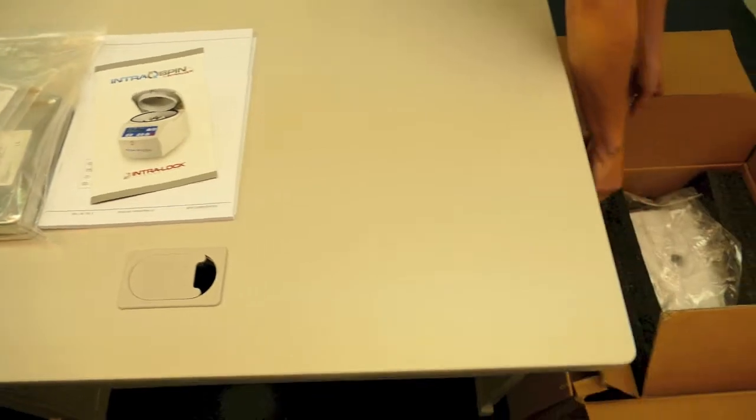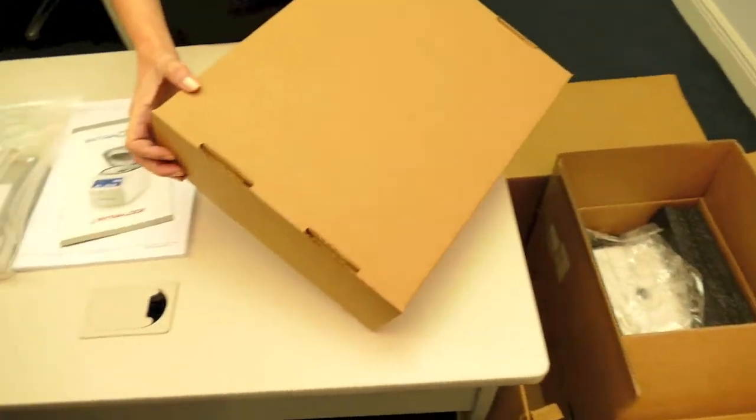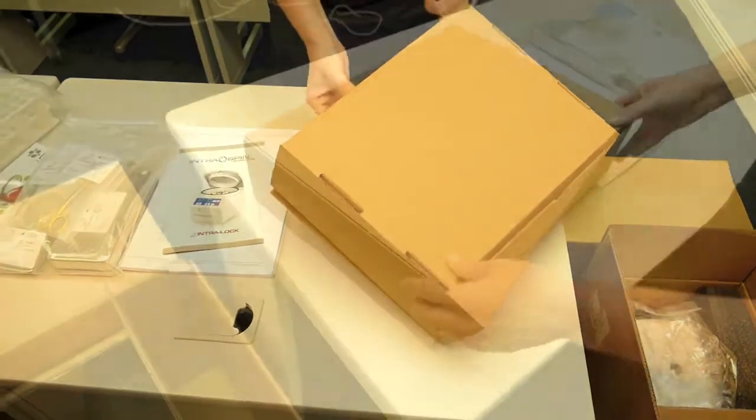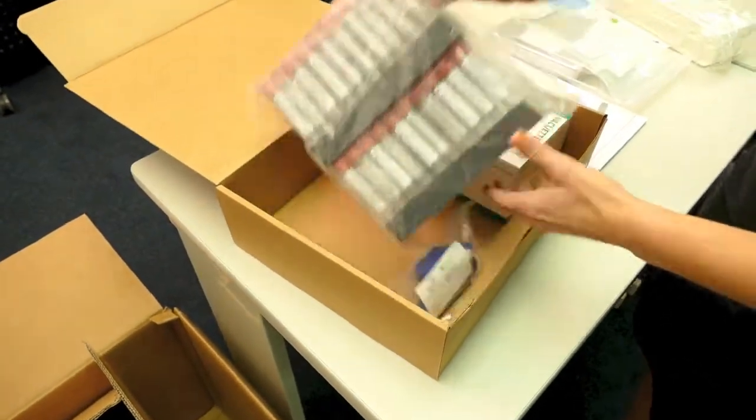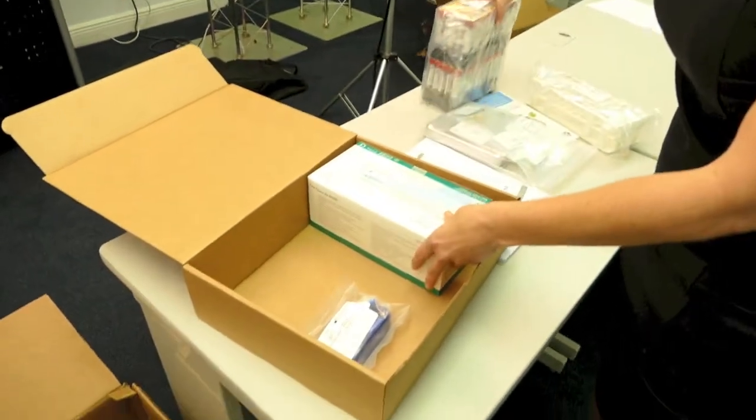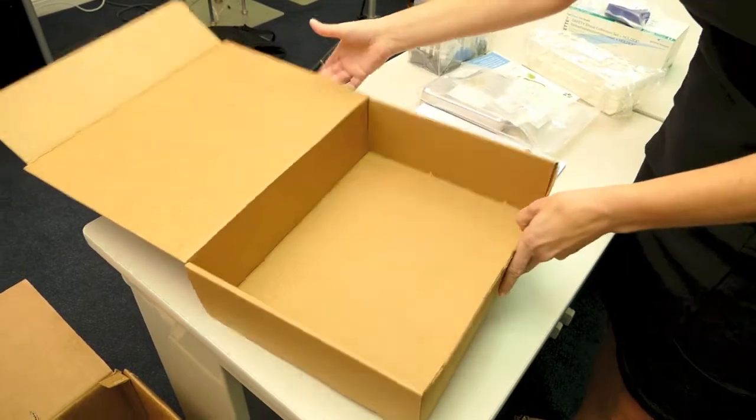The next thing you're going to do is remove the next box. This is going to contain your blood collection kit. One hundred vacutainers, twenty-four of the butterfly needles, and one tourniquet. We're going to place those aside.